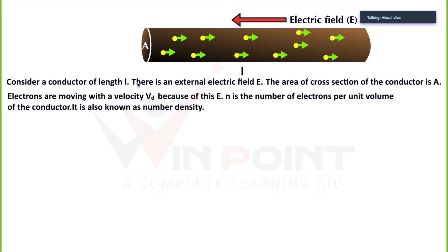Electrons are moving with a drift velocity Vd because of the electric field E. We are introducing a new term called number density. N is the number of electrons per unit volume — that is, in one cubic meter, how many electrons are there. That is number density, and it is very important.